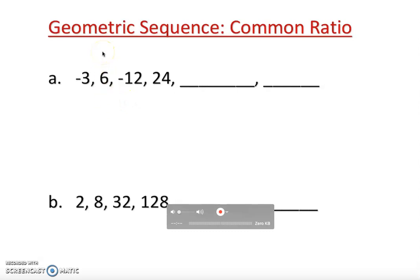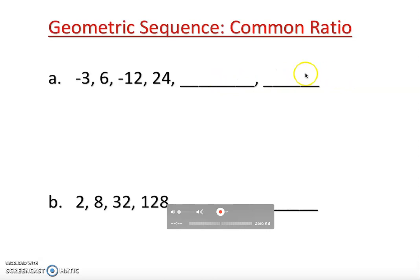Let's talk about geometric sequences. A geometric sequence is a sequence whose consecutive terms have the same quotient — we call it the common ratio. By that, we can figure out the missing number. First, we have to find the common ratio. The common ratio is found by dividing one term by the previous term.